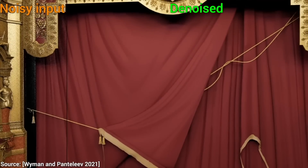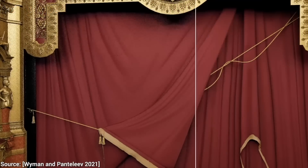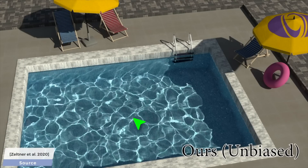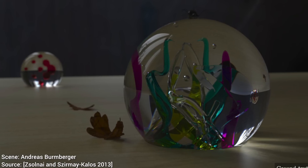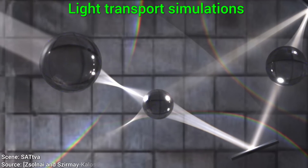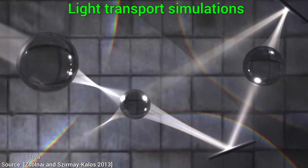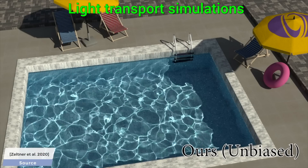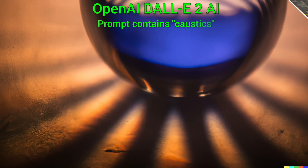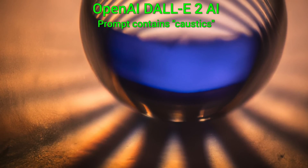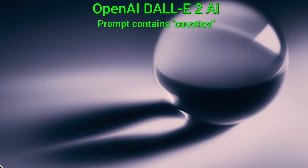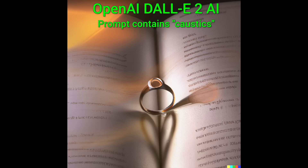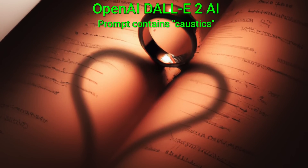Now, what else can this do? Experiment number two, my favorite: caustics! These are beautiful patterns of reflected light that we see a lot of in real life, and they produce some of the most beautiful images any light transport simulation can offer. With such a simulation, we can compute this too. So now, let's ask DALL-E 2 to create some of these for us. And the results are truly sublime — regular caustics, checkmark. And what about those fun heart-shaped caustics when we put a ring in the middle of an open book? My goodness, the AI understands that, and it really works.